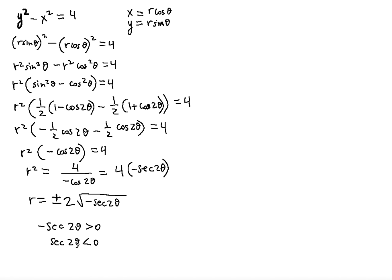Since cosine — and therefore secant — is negative in quadrants 2 and 3, the angle 2 theta must lie in the interval from pi over 2 to 3 pi over 2. Dividing both sides of that inequality by 2, we get theta must satisfy pi over 4 less than theta less than 3 pi over 4.